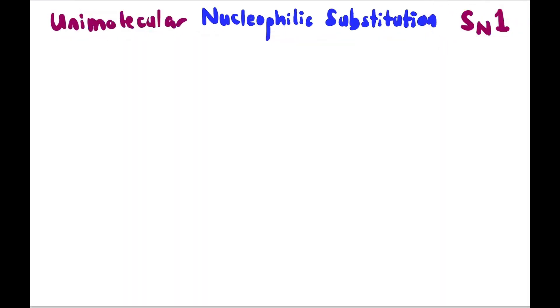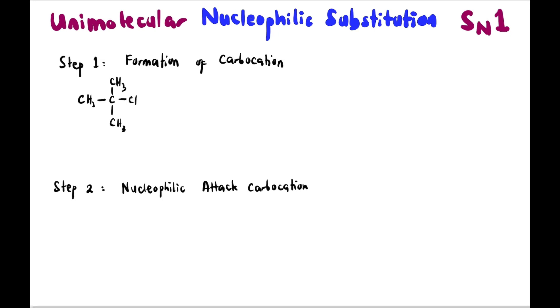For unimolecular nucleophilic substitution, or SN1, there are 2 steps. Step 1: formation of carbocation. It happens one by one. Step 2, then it attacks the carbocation. So this is your haloalkane. First, we will remove Cl. And this is a very slow step, also called the rate determining step, or simply RDS.